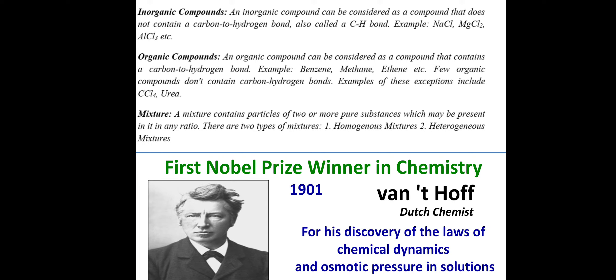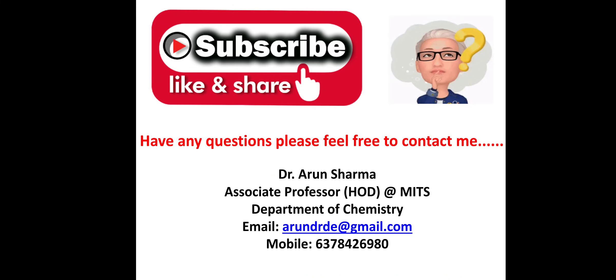An important trivia point: who is the first Nobel Prize winner in chemistry? In 1901, Van't Hoff, a Dutch chemist, received the first Nobel Prize in chemistry for his discovery of the laws of chemical dynamics and osmotic pressure in solutions. This is commonly asked in various competitive examinations, so please remember it.